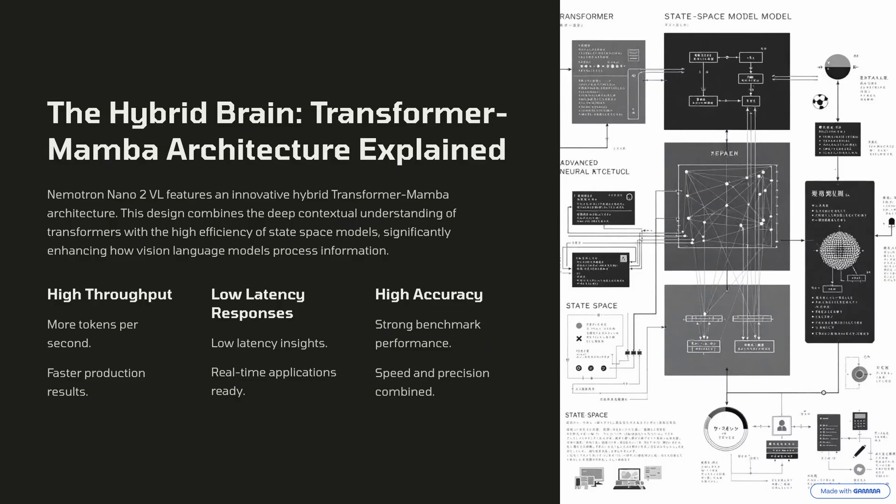this can often fill up that context window quite quickly. That's where the Mamba architecture really shines, because it's lightning fast, but sometimes it can miss nuance. By combining these together, you effectively get the best of both worlds.